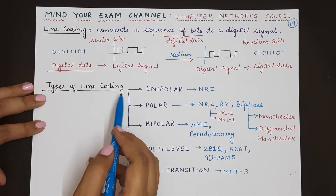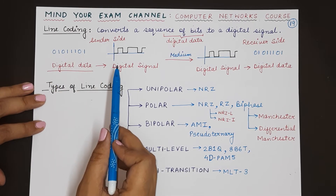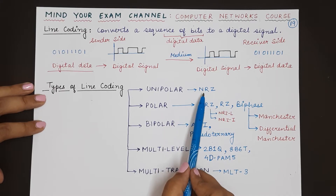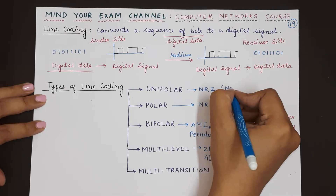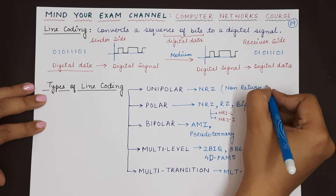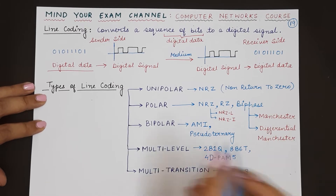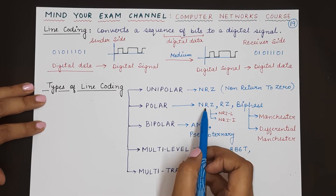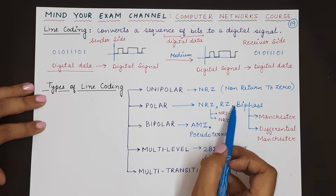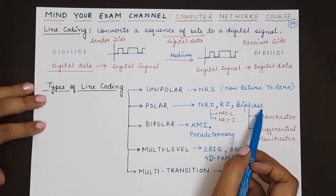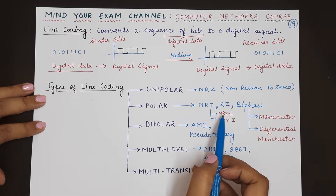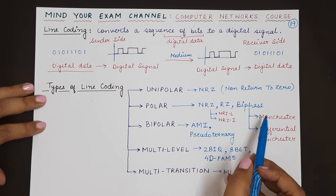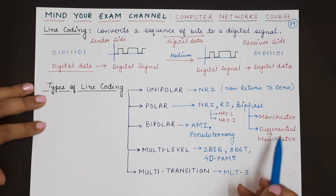There are different types of line coding techniques. The first type is unipolar, which has one subcategory: NRZ, which stands for non-return to zero. The second type is polar line coding, which has three subtypes: NRZ, RZ (return to zero), and biphase. NRZ is further divided into NRZ-L (NRZ level) and NRZ-I (NRZ invert). Biphase has two subcategories: Manchester and differential Manchester.